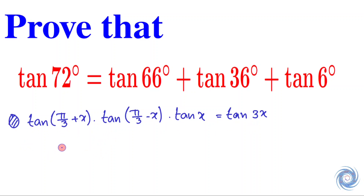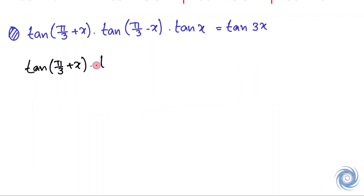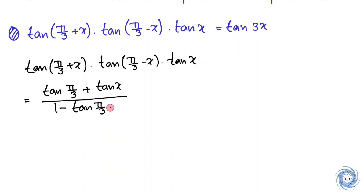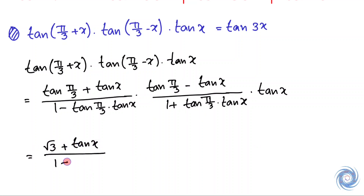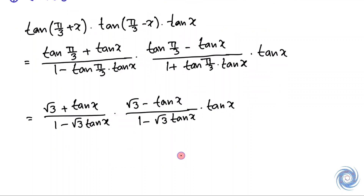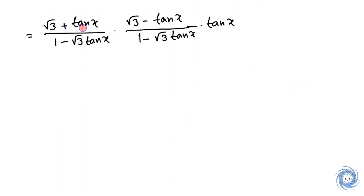Now let us start from the left hand side. Here we have used the formula of tan(a + b) and tan(a − b). And from here we have an expression. Now this is of the form (a + b)(a − b), and also in the denominator we have (a − b)(a + b). So from here we have the simplified form.